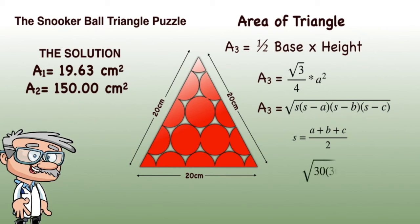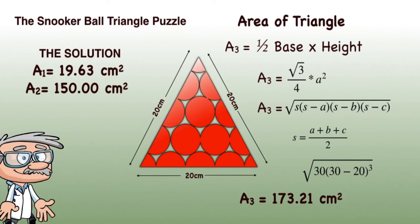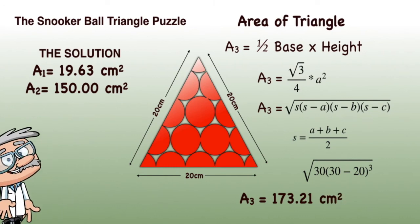So S is 60 over 2, which is 30. Putting these values into the formula gives an area of the inner triangle of 173.21 square centimeters. If you try the other formulas, you will get the same answer.